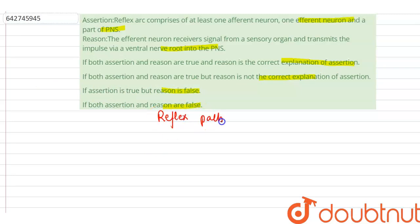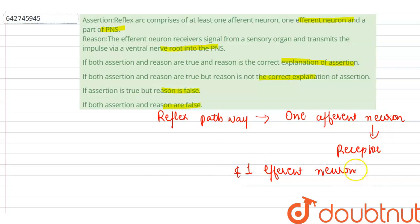So the reflex pathway or reflex arc comprises one afferent neuron, that is the receptor neuron, and one efferent neuron, that is effector or exciter, appropriately arranged in a series.